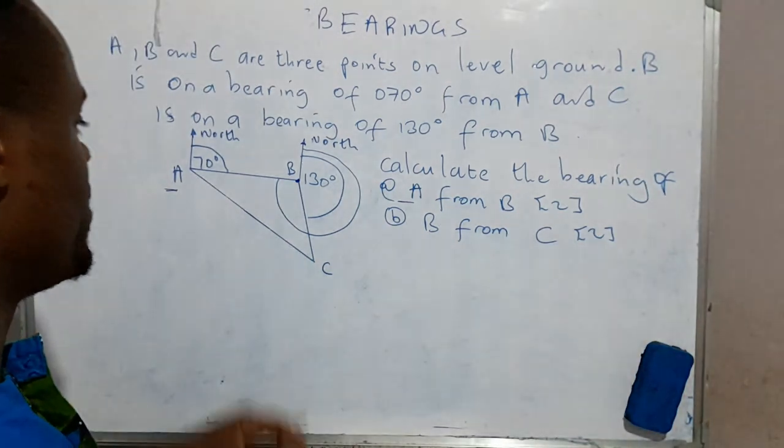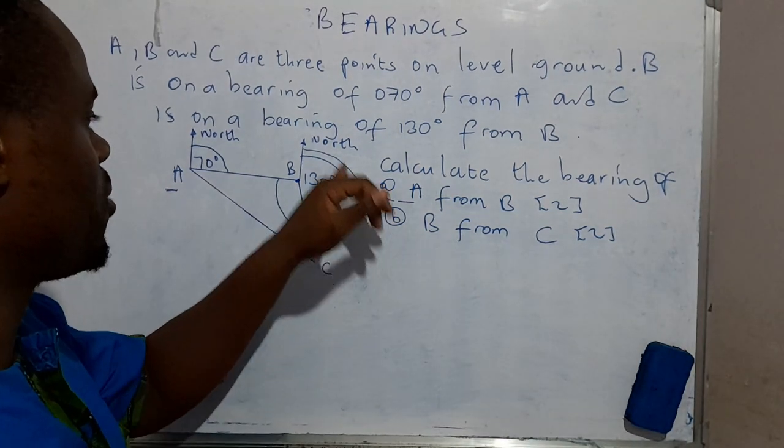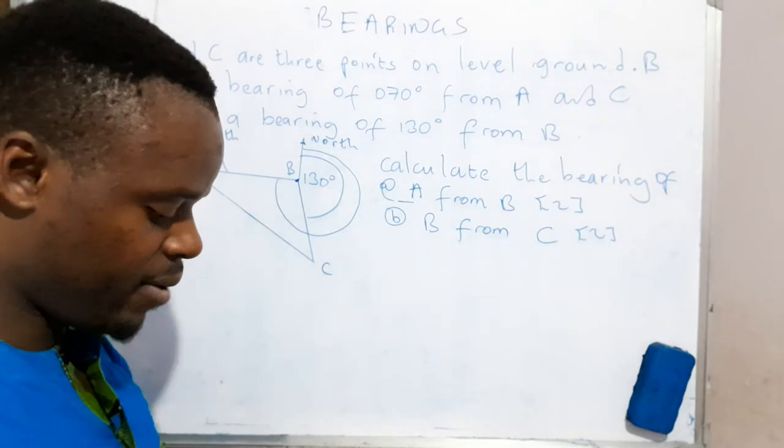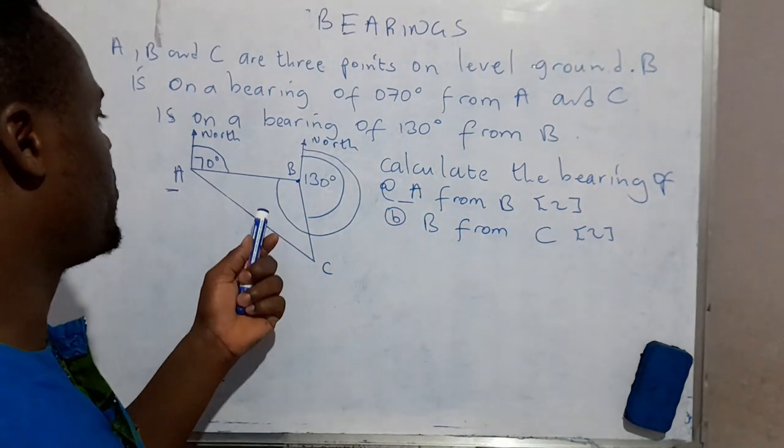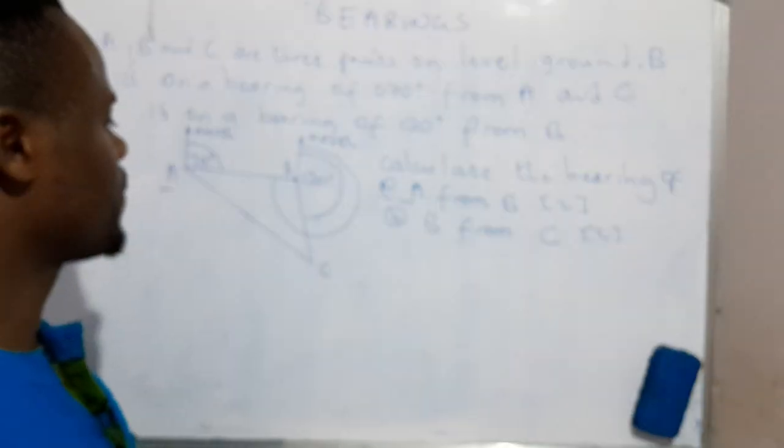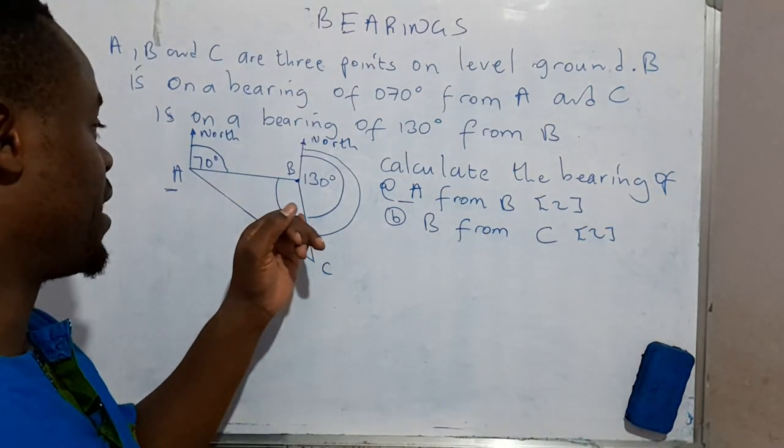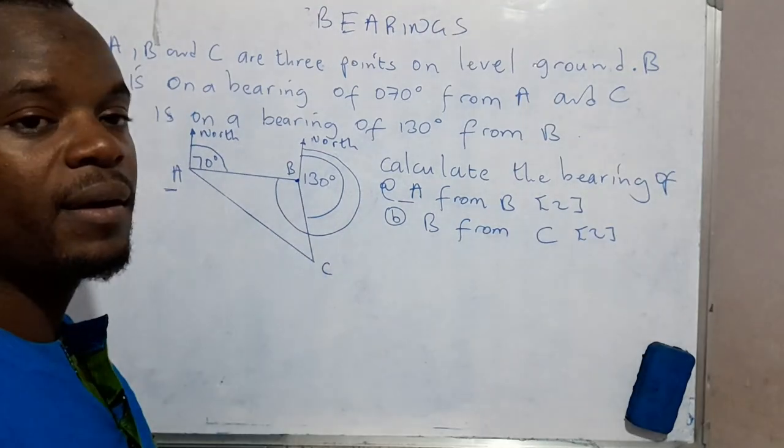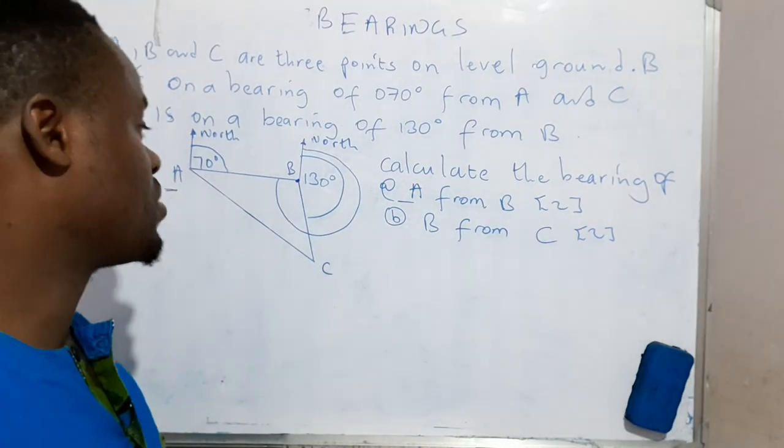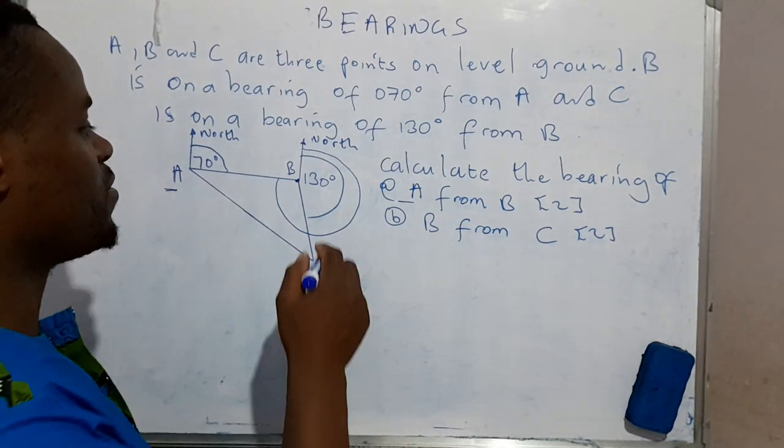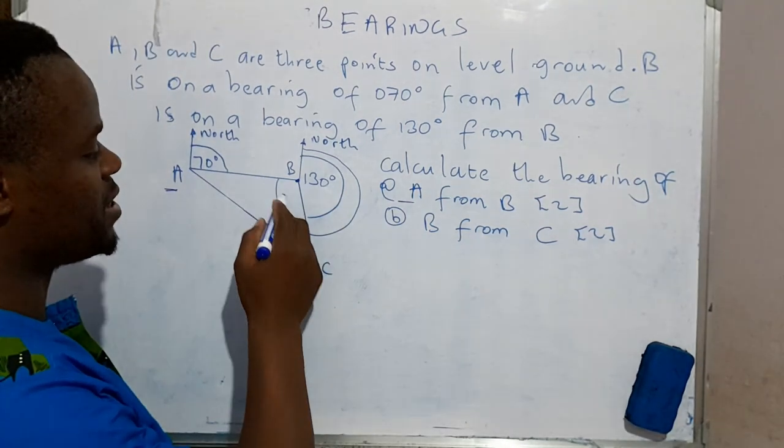So our interest is to know this angle here. What is the size of that angle? Now there's nowhere where we've been given the size of the angle starting from here to that. And we haven't been given this angle on the inside. Because if it was given, we could have just added 130 to this angle here.